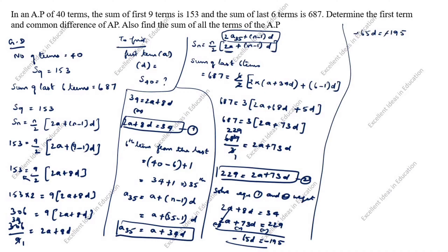Cancelling the negatives: d = 195 ÷ 65 = 3. So d is equal to 3.